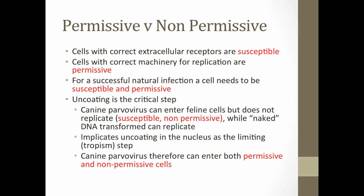A brief review from that discussion: cells with the correct extracellular receptors — such as sialic acid — that allow viruses to enter the cell are called susceptible cells. If the virus can get into the cell, that cell is susceptible. If the cells have the correct machinery and proteins to recognize the viral DNA and replicate it, those cells are called permissive. For a successful natural infection, the cell needs to be both susceptible and permissive.